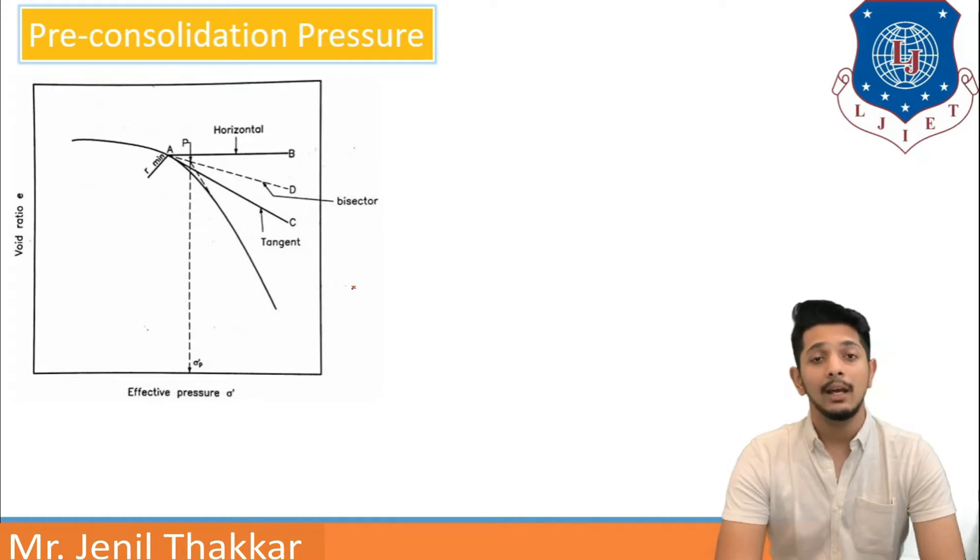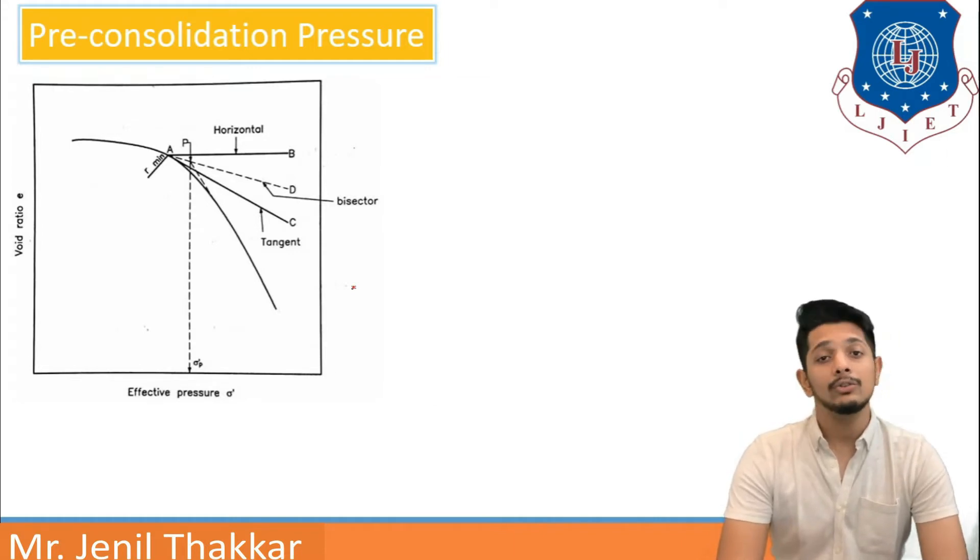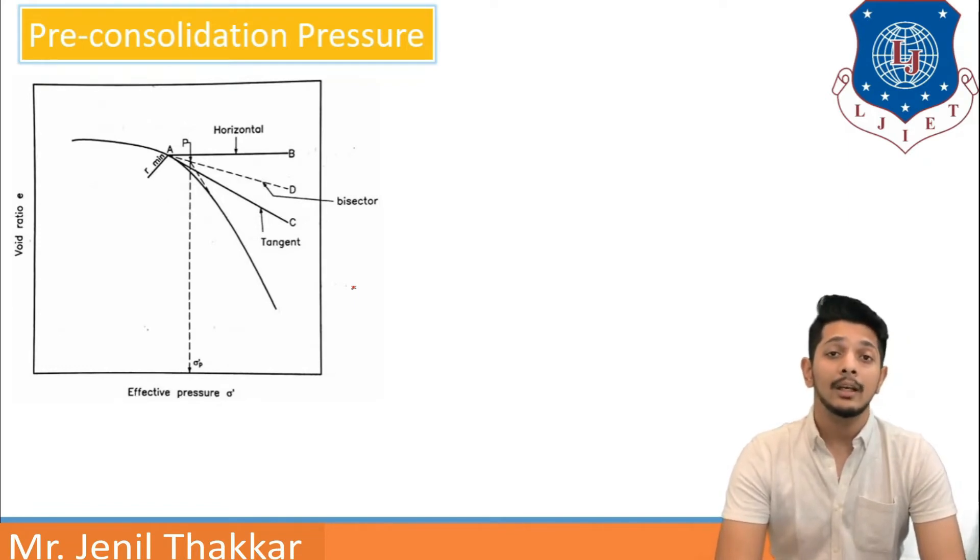This graph is obtained from a consolidometer test for consolidation of an undisturbed clay sample and it is plotted on semi-logarithmic graph. In this graph, let us understand the procedure to determine pre-consolidation pressure.